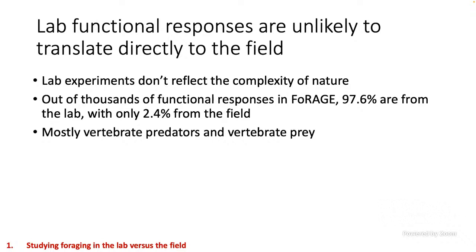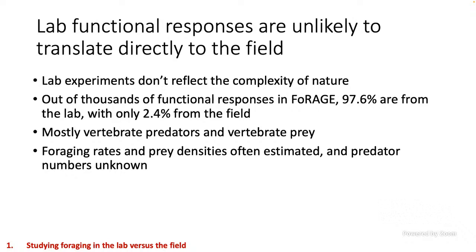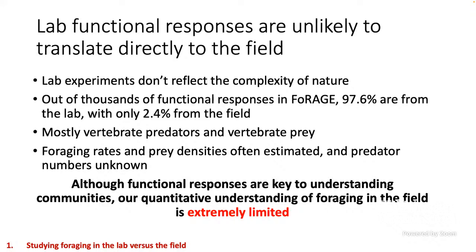Most field functional responses we do have are from vertebrate predators consuming vertebrate prey, but the majority of predator-prey interactions in nature are not vertebrate-on-vertebrate. We're missing a lot of what's happening out there. Additionally, foraging rates and prey densities often have to be estimated because it's really hard to get real values, and predator numbers are often unknown — so we don't have good units for field functional response estimates. Units are really key to translating functional responses into things like population dynamics. Although functional responses are key to our understanding of biological communities, our quantitative understanding of foraging in the field is unfortunately extremely limited.